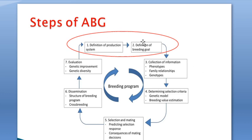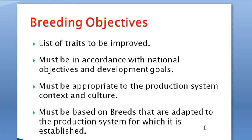Now let's start with the first steps, including the definition of the production system and the definition of breeding goals. The breeding objective is concerned with the list of traits to be improved. This breeding objective must be in accordance with national objectives and development goals, must be appropriate to the production system, context and culture, and must be based on breeds adapted to the production systems for which it is established.